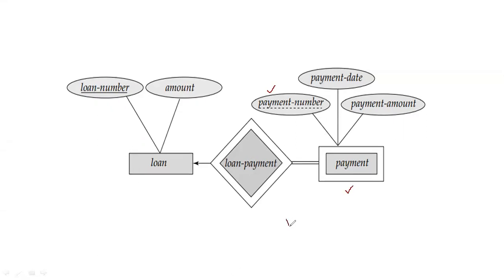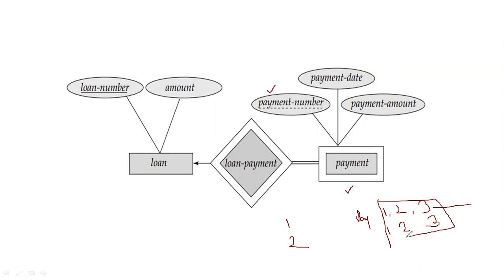For example, suppose there is loan number one — its payments start with one, two, three. Now for loan number two, payments also start with one, two, three. So we have duplicate entries: payment one and one, two and two, three and three, and so on. Because of this duplication problem for a particular entity set, we call it a weak entity set.